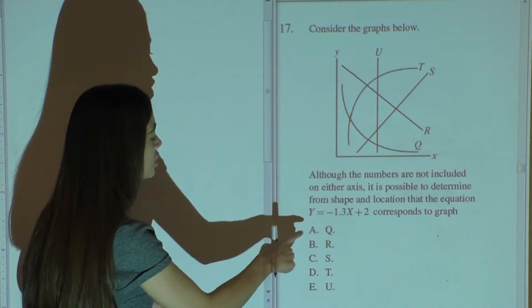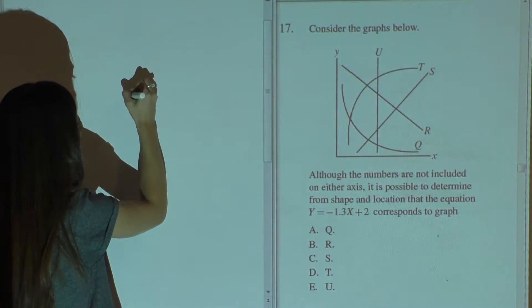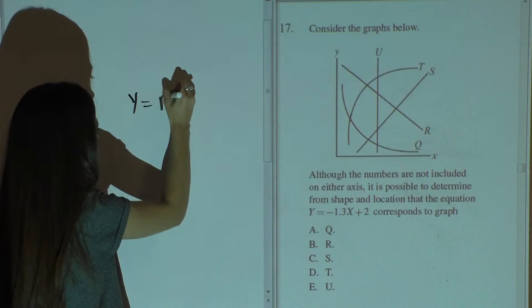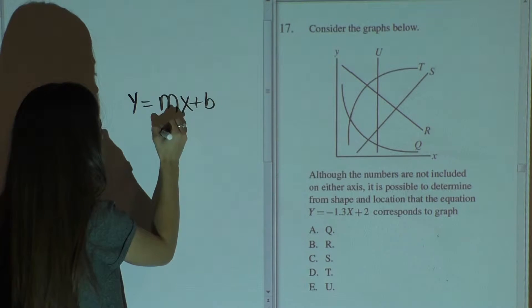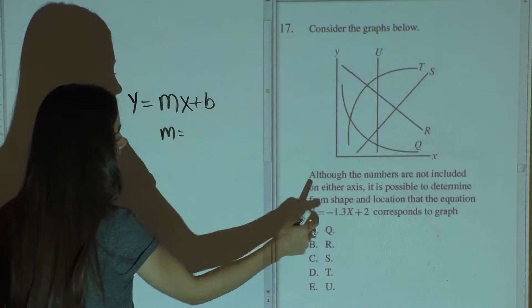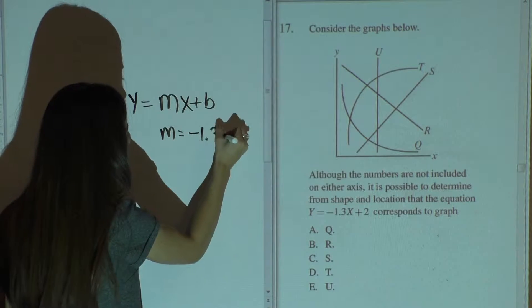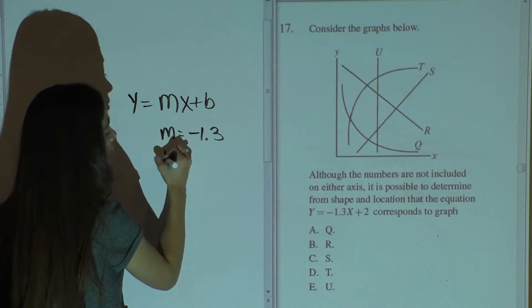and then they give you the options. So in this case, we are given the format y equals mx plus b, where m is our slope, which is negative 1.3, and 2 is just our y-intercept.